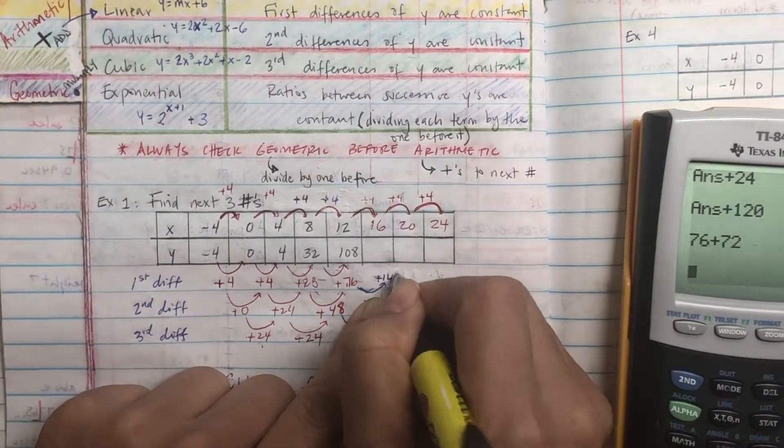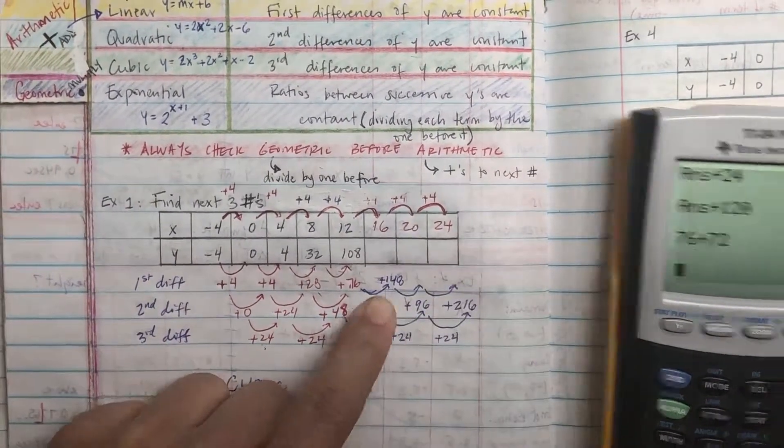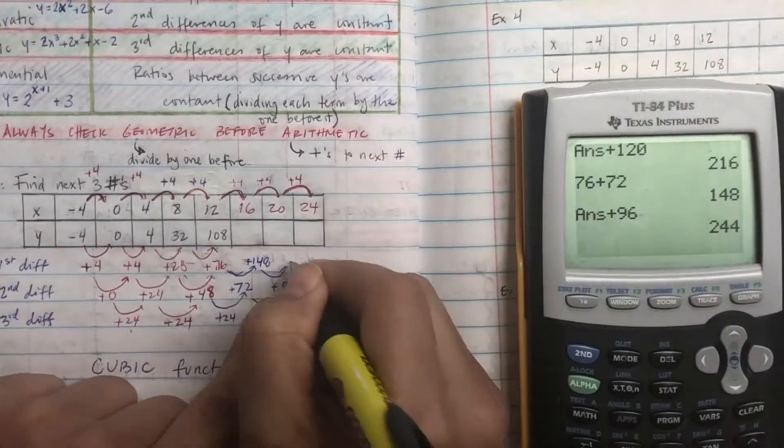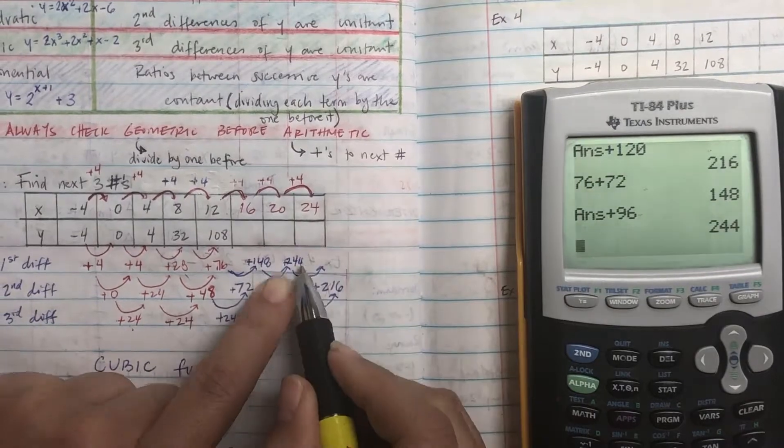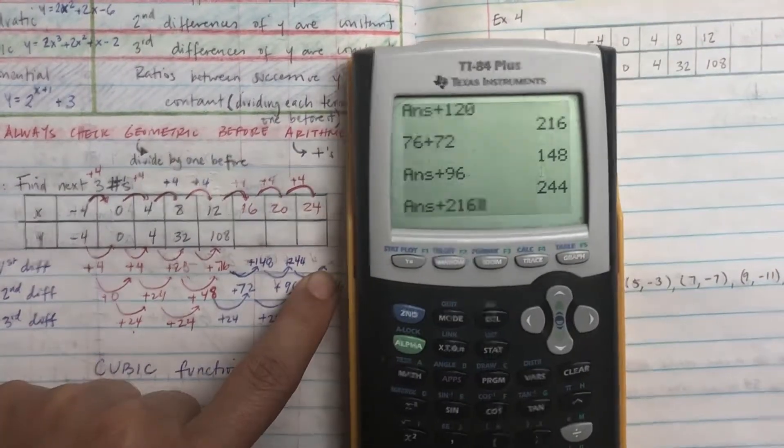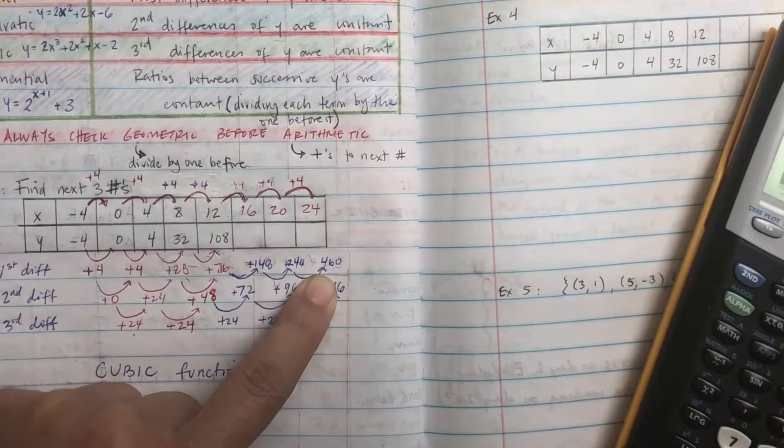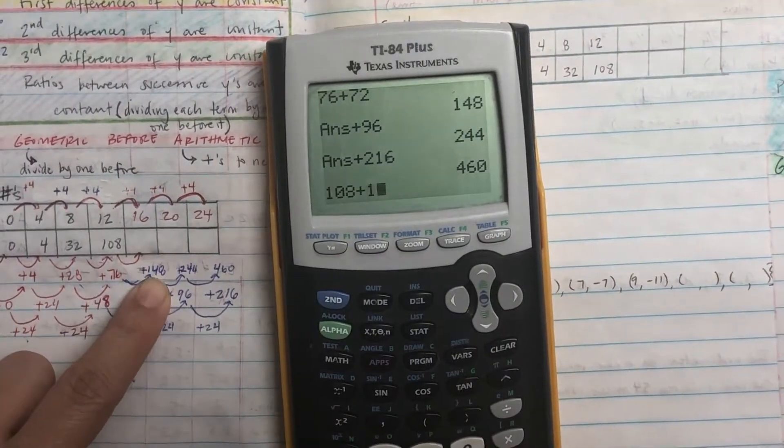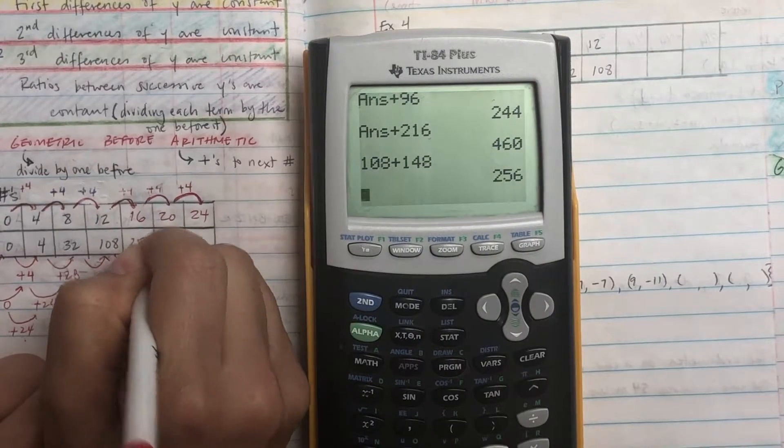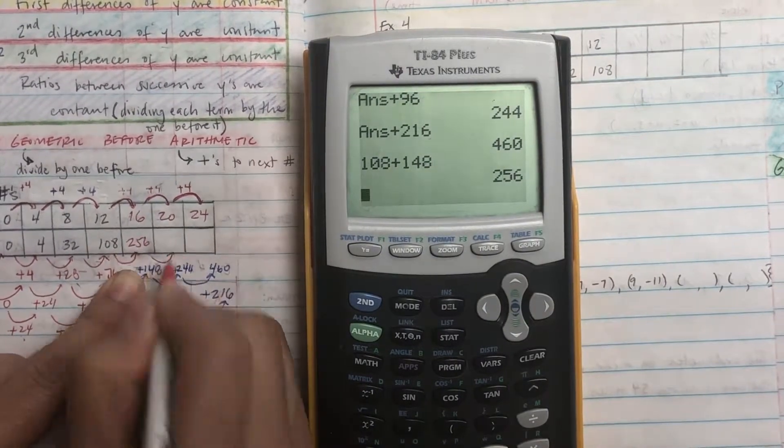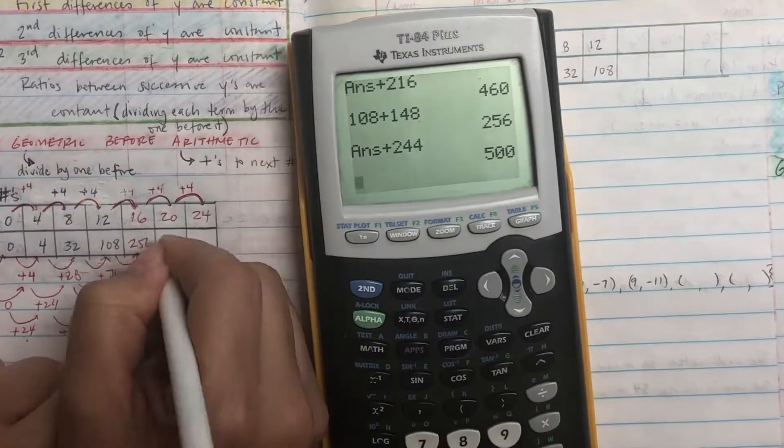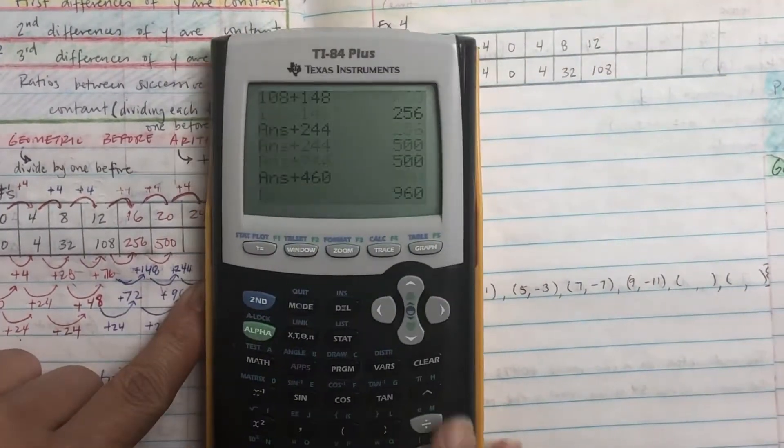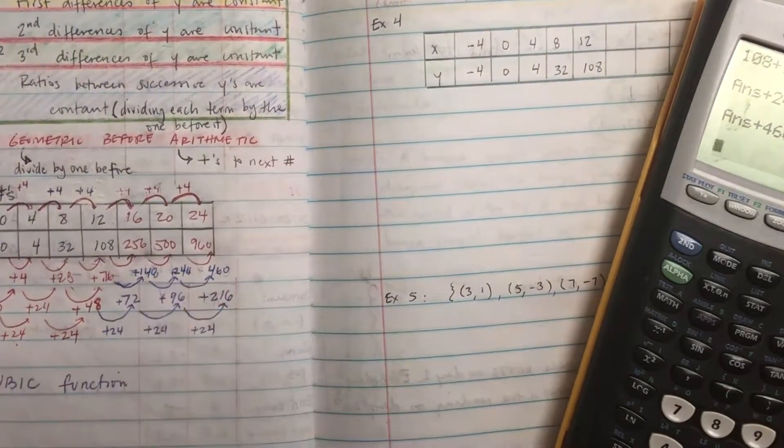Then that 148 plus what's the next number underneath it? 96. That's going to give me 244. Take that number plus, how does it change now? 216. That's going to give me 460. Now fill in the top part. So it's going to be 108 plus what? What's the new number? 148. And then you get that answer. Then it's going to be 256 plus, what's the new number? 244. So that's going to be 500. Then finally, 500 plus, what's the last number? 460 is going to be 960. So you can use what you have to fill in the next three numbers.